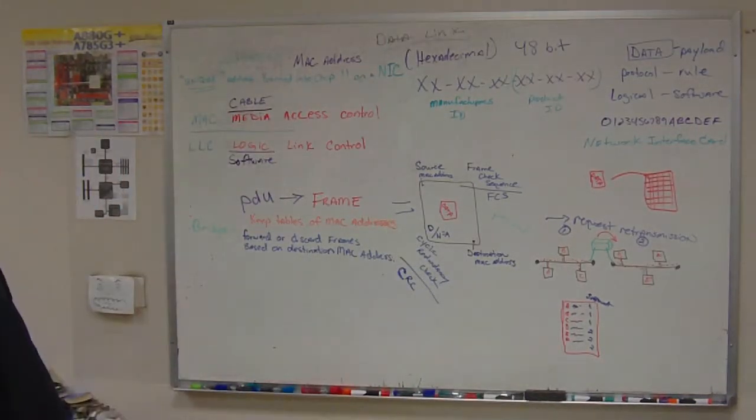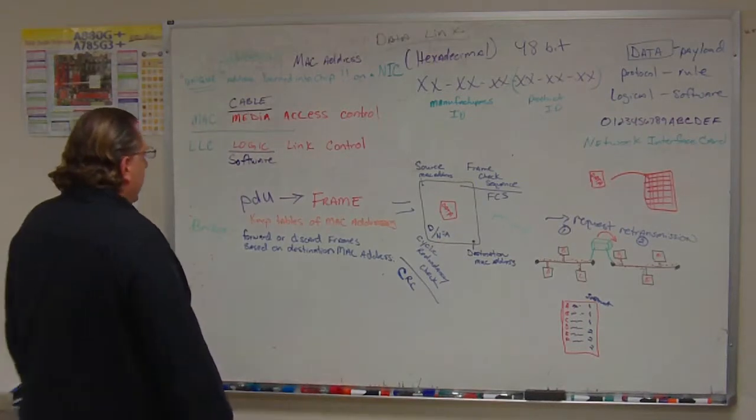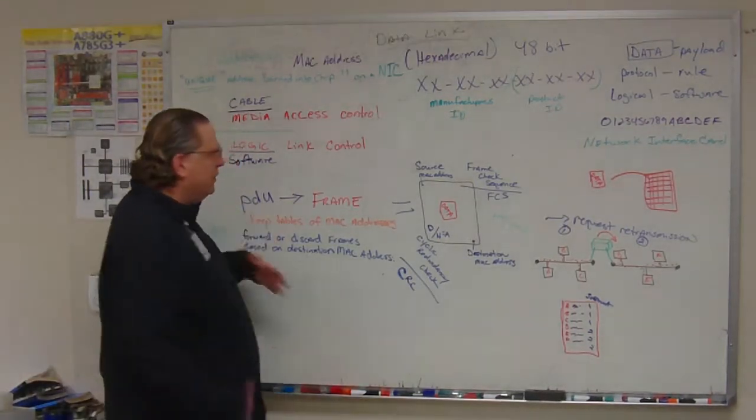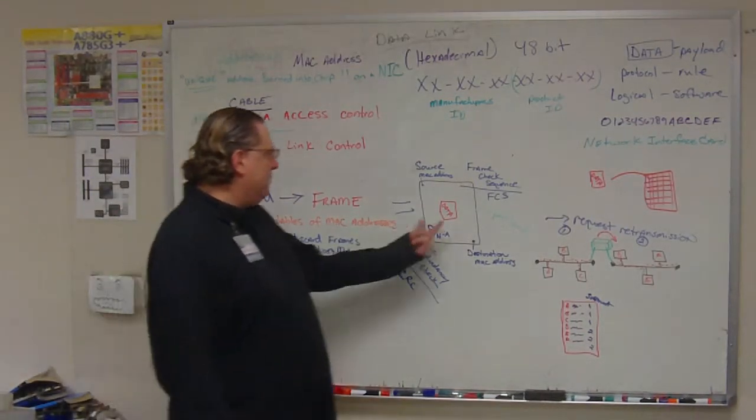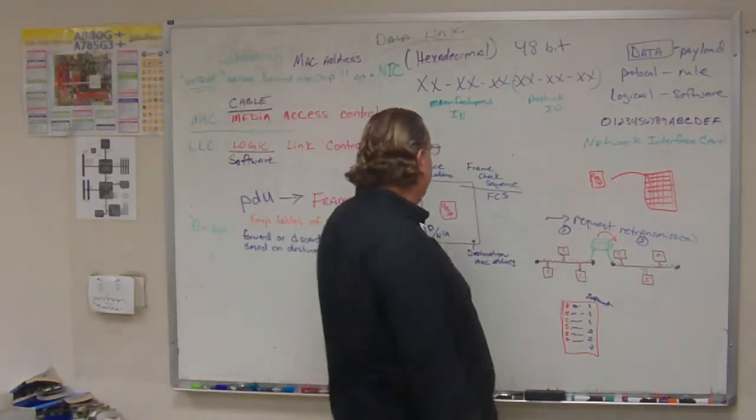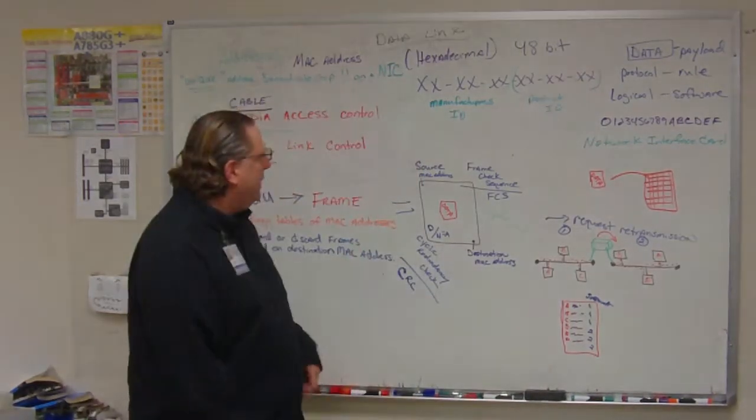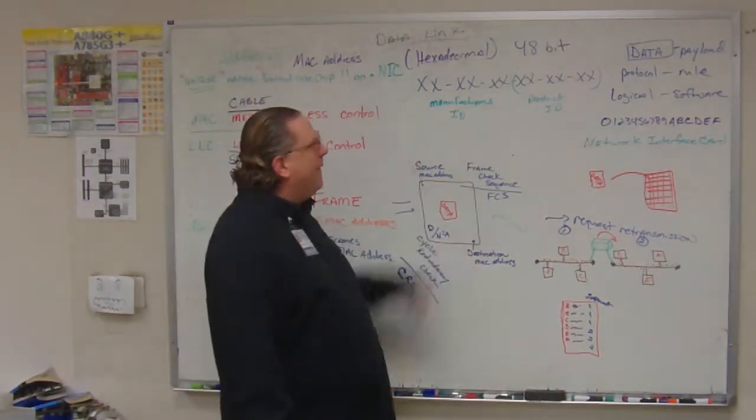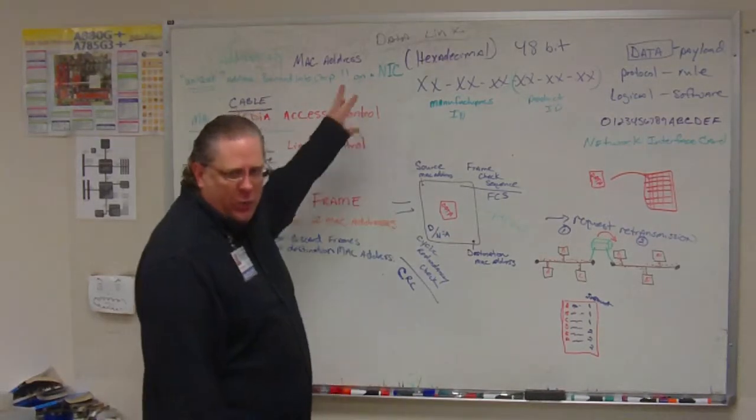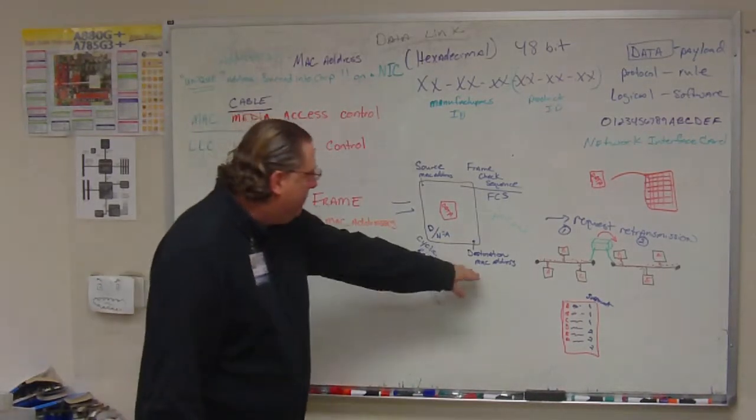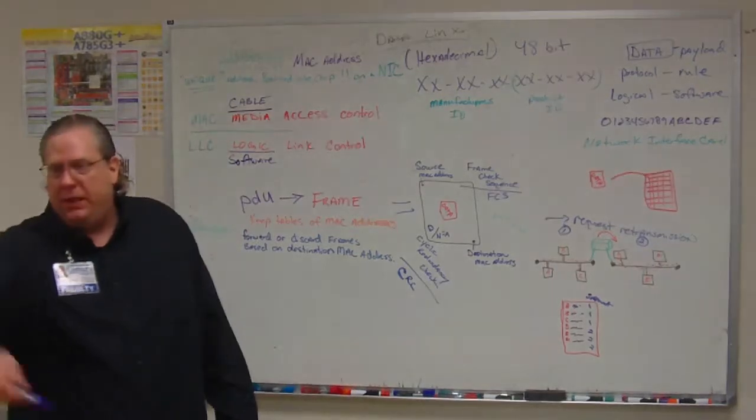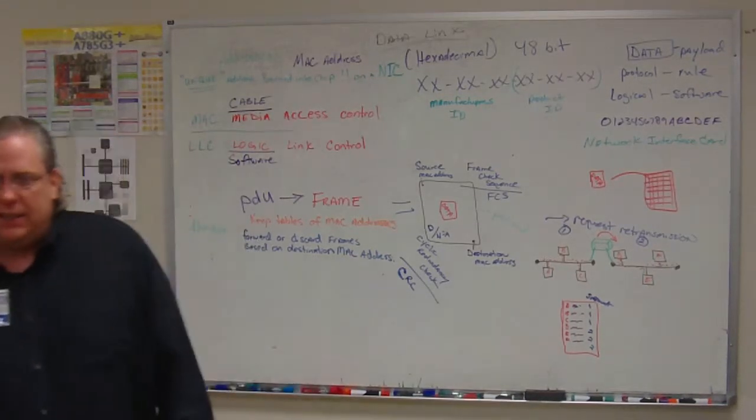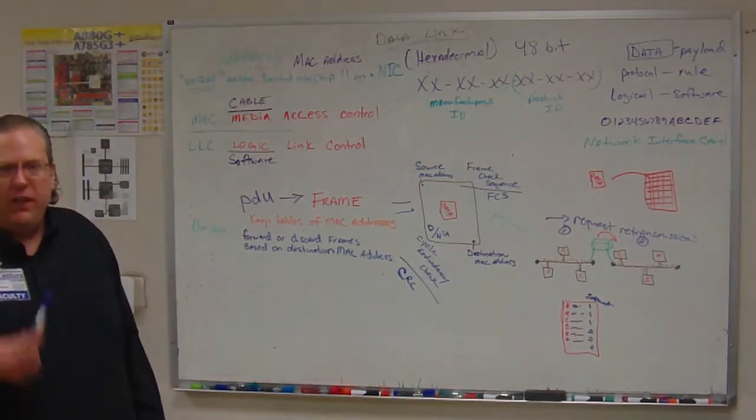Now, data at the data link layer, the PDU or what data looks like at that layer is we take that little piece of data, which we call the payload, and we encapsulate it with the source and destination physical address, or hardware address, known as the MAC address.